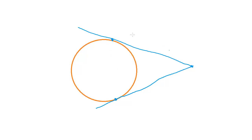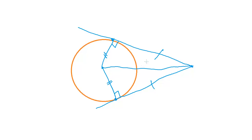If two tangents are drawn from a common external point, the two tangent lengths are equal. We know the radius makes 90 degrees with each tangent, and since the radii are equal, joining the center to the external point forms two congruent triangles — meaning the two tangent lengths from that external point are equal.